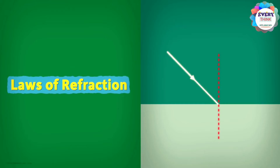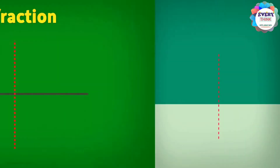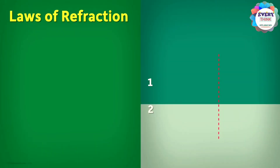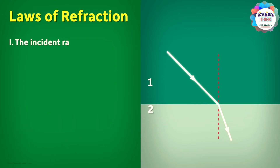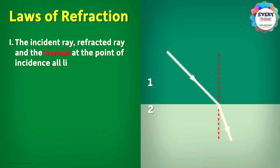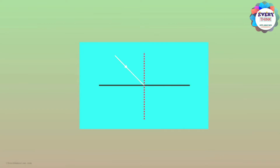There are two laws of refraction. The first law of refraction states that the incident ray, refracted ray, and the normal at the point of incidence all lie in the same plane. This means that if you were to draw this on a piece of paper, they all lie on the plane of the paper and not out of it.